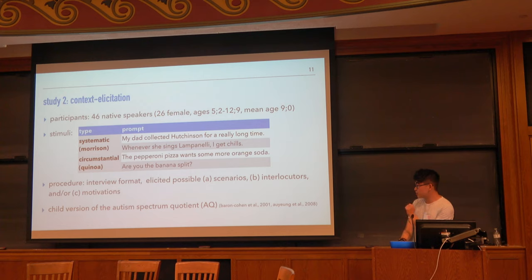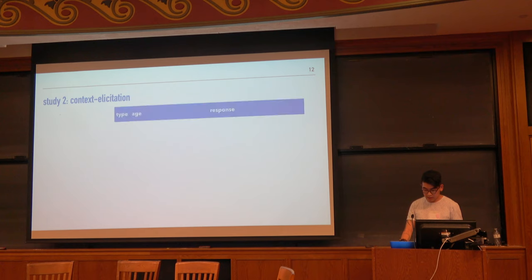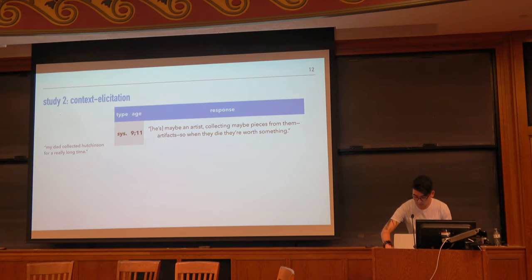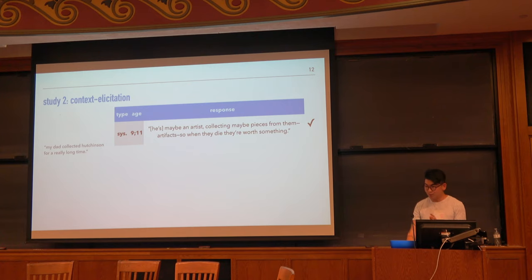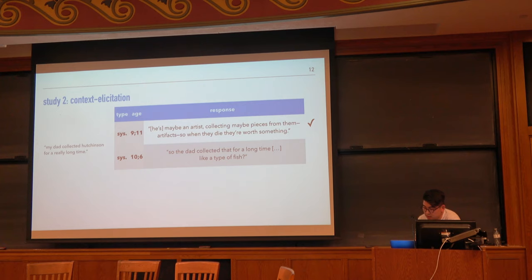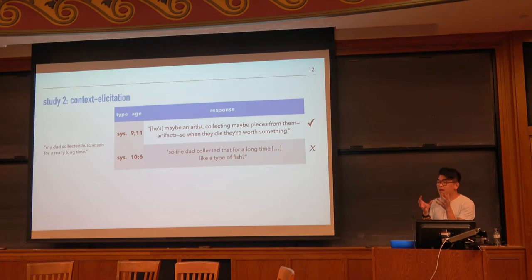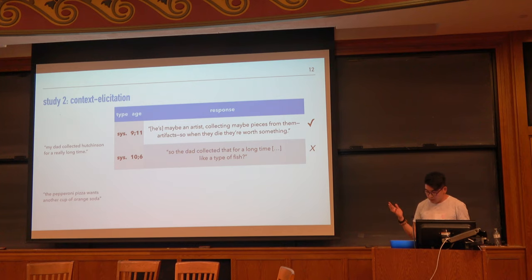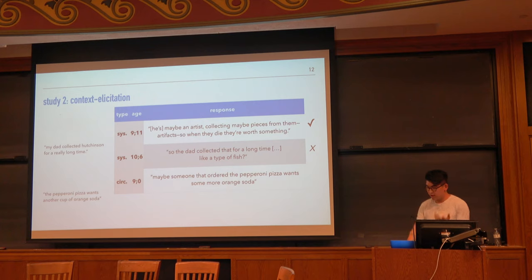We also gave them the child version of the AQ questionnaire. For the sentence my dad collected Hutchinson for a really long time, here's one response: the artist collected maybe pieces from them, artifacts, that might have died or something — a rich conceptual structure, coded as correct. Another response: the dad collected that, a type of fish one — here the child takes the word to be a name for a kind of thing, like a type of fish or type of rock, coded as wrong. For the pepperoni pizza wants another cup of orange soda: maybe someone that ordered the pepperoni pizza wants more orange soda — perfect metonymic interpretation.